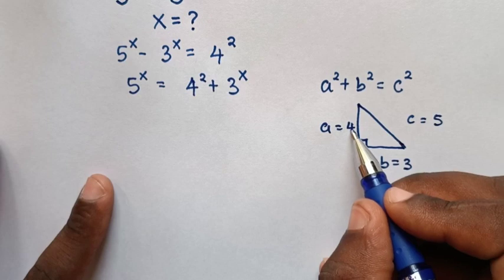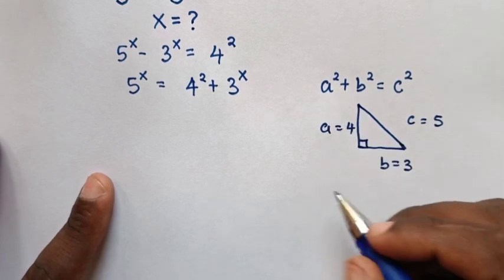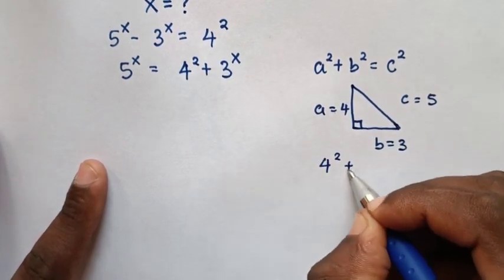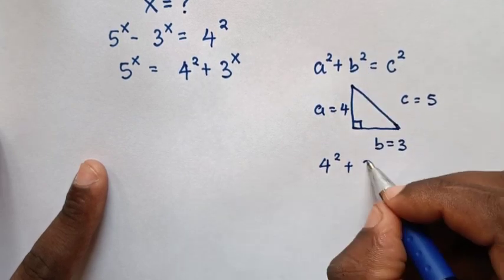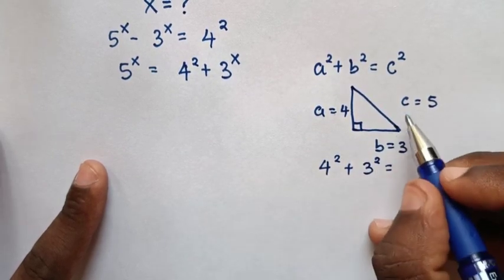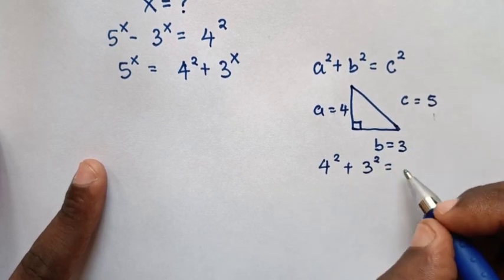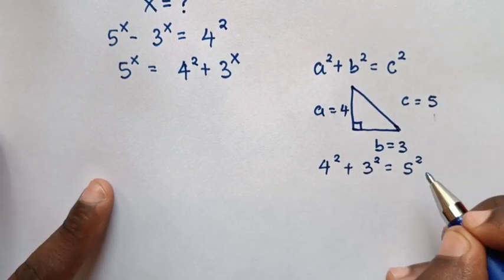So from here, a is 4, so it will be 4^2 plus b which is 3, so 3^2 equals c which is 5, so 5^2.